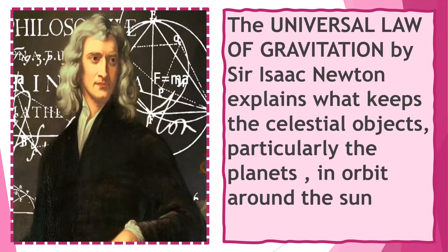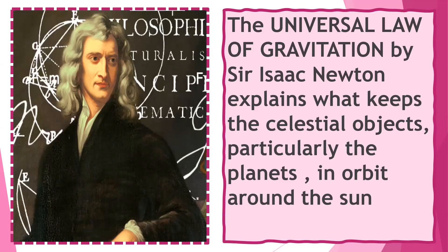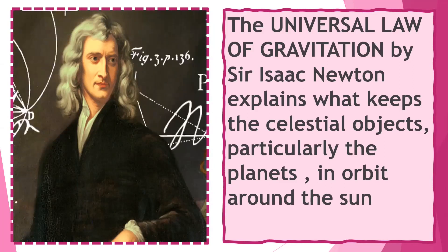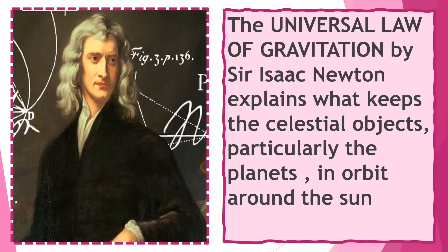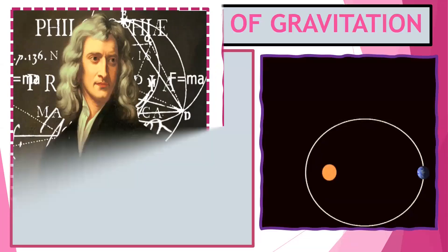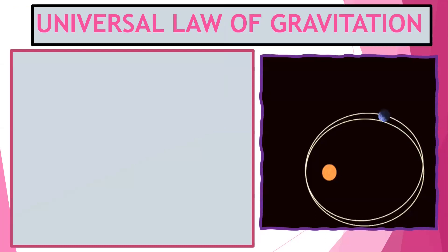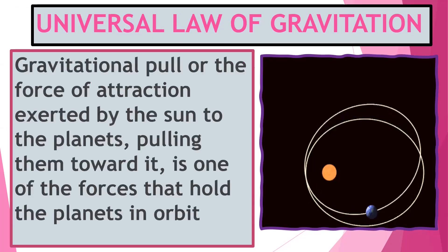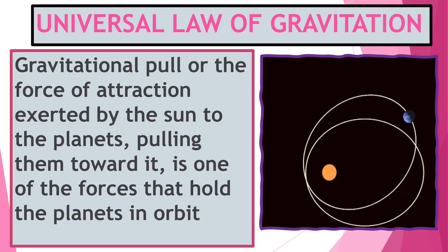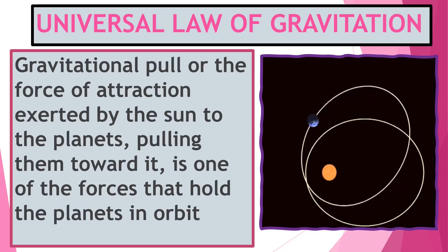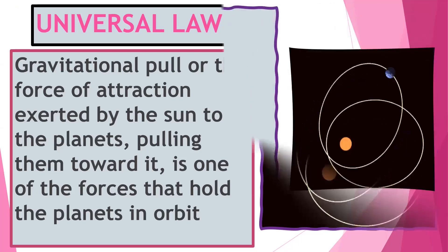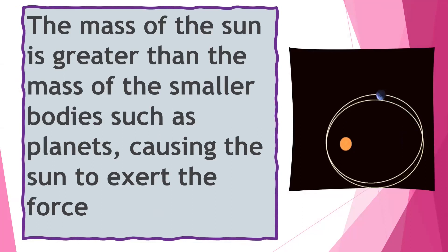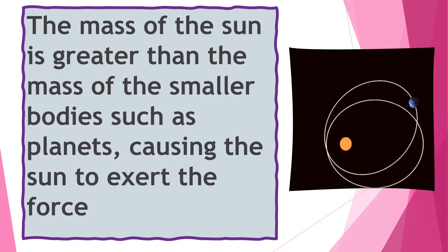And the man behind the explanation of the universal law of gravitation is none other than Isaac Newton. He explained what keeps the celestial objects, particularly the planets, in orbit around the sun. In terms of the universal law of gravitation, the gravitational pull, or the force of attraction exerted by the sun to the planets pulling towards it, is one of the forces that hold the planets in orbit. The mass of the sun is greater than the mass of the smaller bodies, such as the planets, and it causes the sun to exert the force.